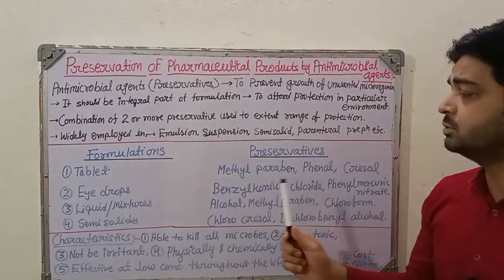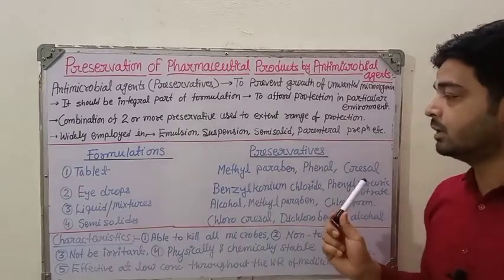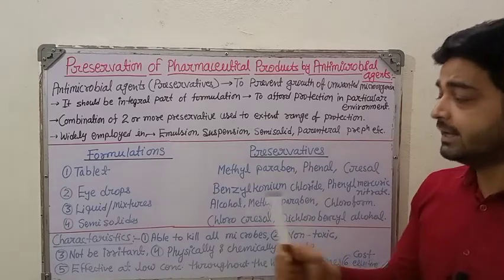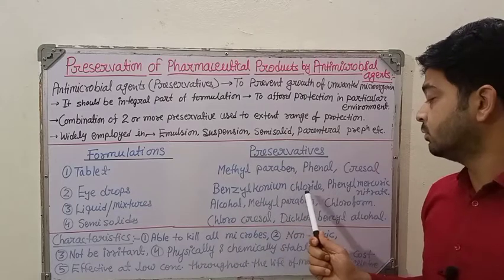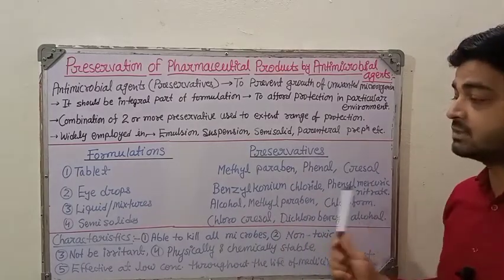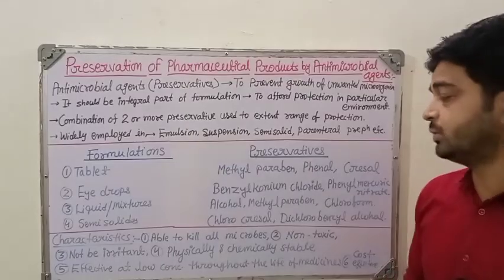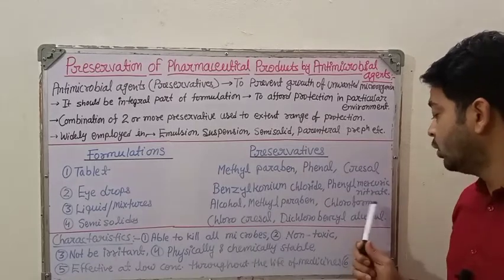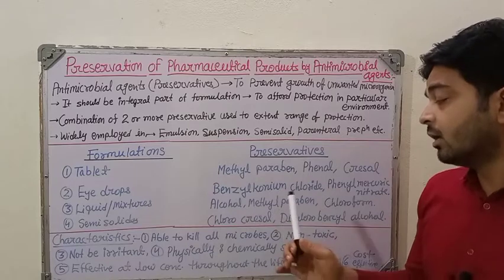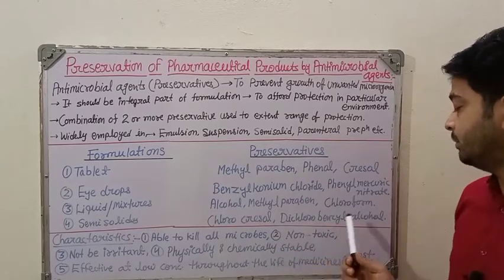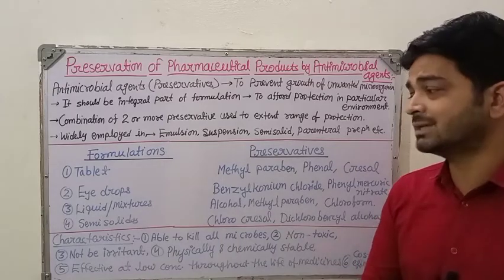Some examples of preservatives used in different formulations: in tablets, methylparaben, phenol, and cresol are popular preservatives. In eye drops, benzalkonium chloride and phenylmercuric nitrate are used in ophthalmic preparations. For liquids and mixtures, alcohol, methylparaben, and chloroform are used. For semi-solid preparations, chlorocresol and dichlorobenzyl alcohol are used.